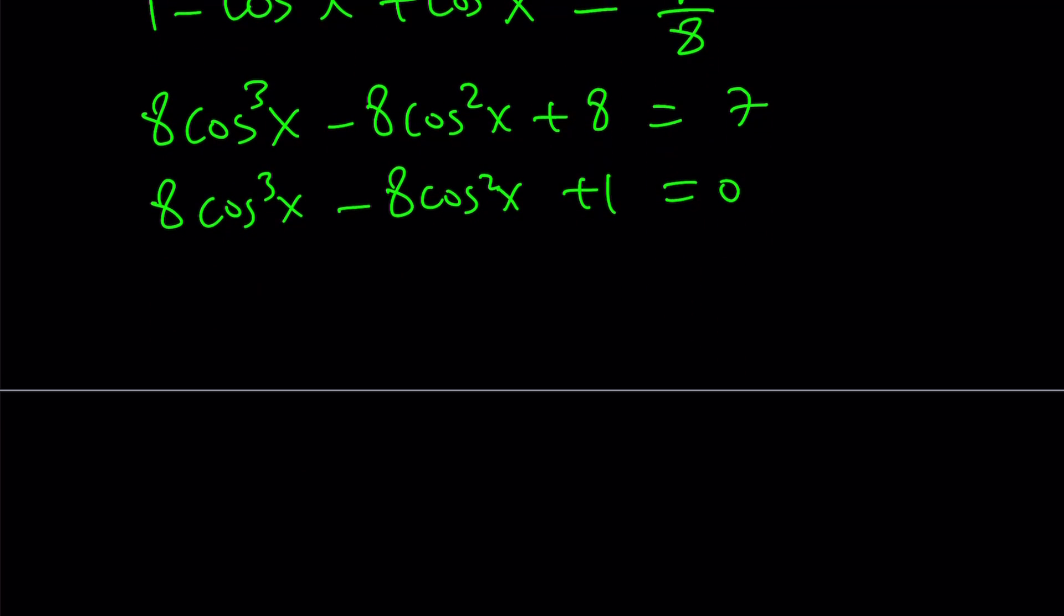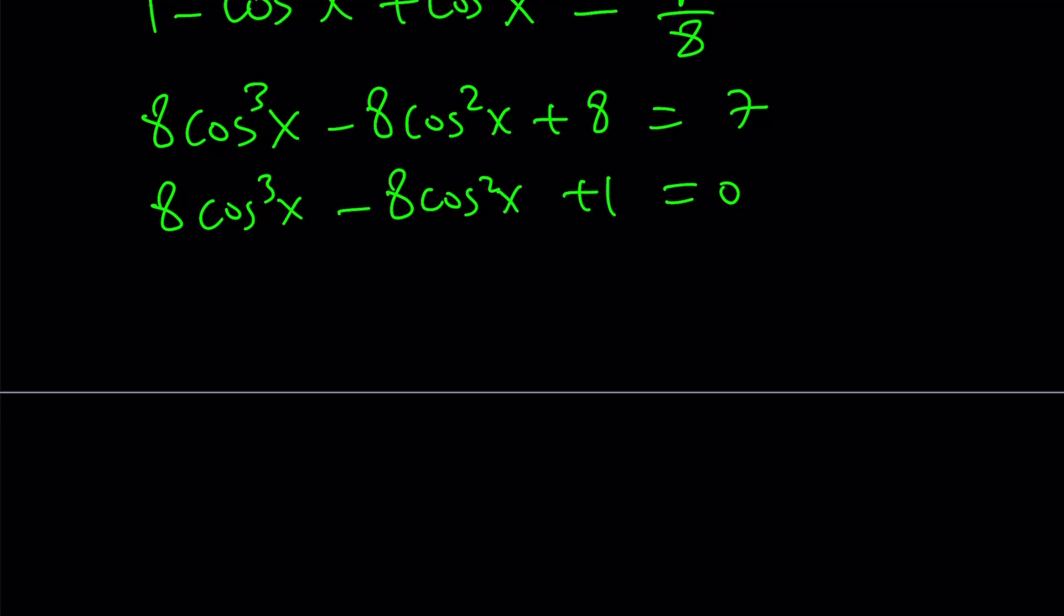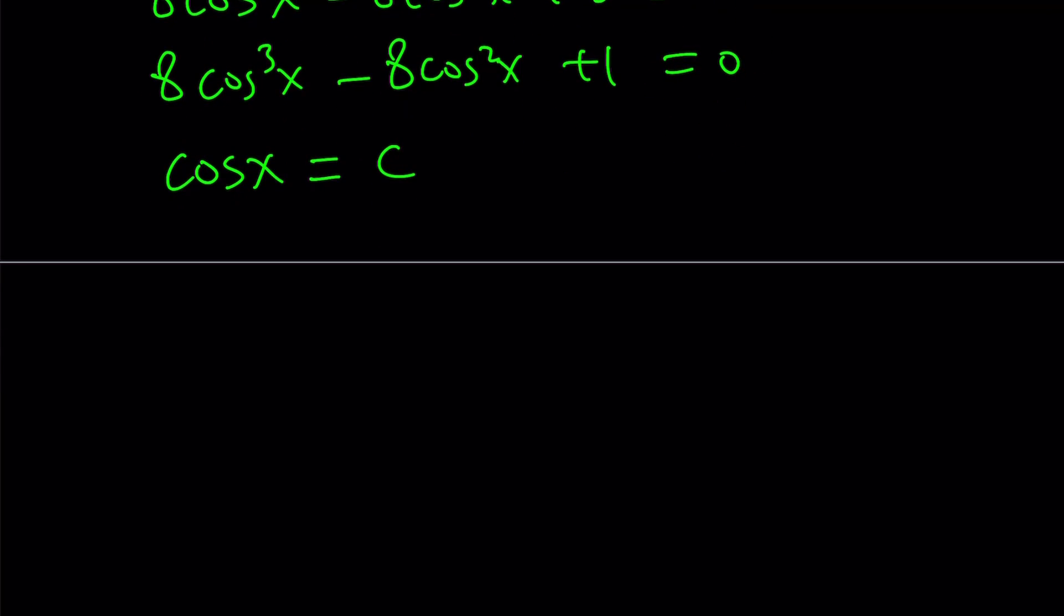Now, this is a cubic equation in cosine x. So let's go ahead and use substitution always. That's the go-to method. So let's replace cosine x with c. Wow, that was a huge improvement, right? So now I'm going to write my equation as 8c cubed minus 8c squared plus one equals zero. But notice that we don't have a c term. Well, if we didn't have a c squared, that would be nice because that would be a reduced cubic. But that's okay, we can deal with this.